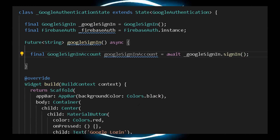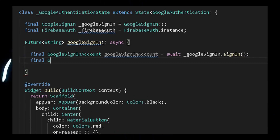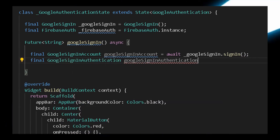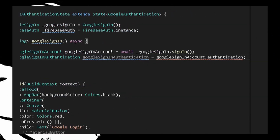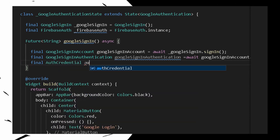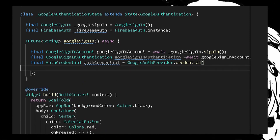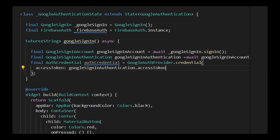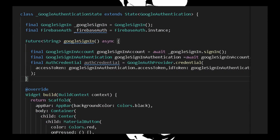After getting the sign-in account, we need the authentication — specifically the access token and id token. Write: final GoogleSignInAuthentication googleSignInAuthentication = await googleSignInAccount.authentication. Then declare the auth credentials: final AuthCredential authCredential = GoogleAuthProvider.credential(). From this provider we get the credentials, providing accessToken: googleSignInAuthentication.accessToken and idToken: googleSignInAuthentication.idToken.